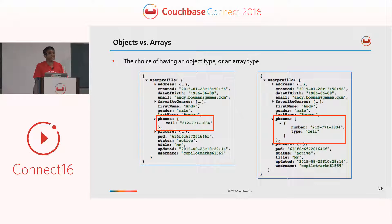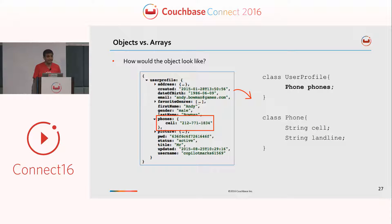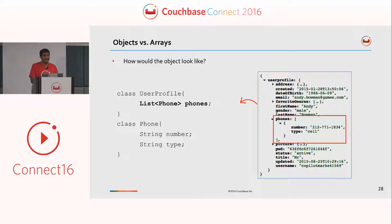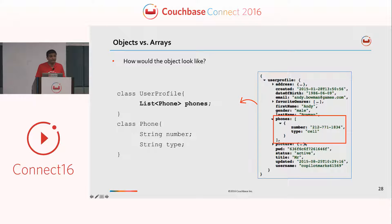The other choice is between objects and arrays. Look at the document on the left where phones is an object that's embedded, while on the right you have an array of phones. In the object model for the left case, there's a class UserProfile which has a phone object embedded — the class Phone has cell or landline or whatever phone number. While in the array case, you're going to create a list of phones if you have more than one phone for a user. I do not say which one is better — I just want to say this is the choice you have while data modeling JSON documents.